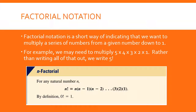So for any natural number n, n factorial means n times (n minus one) times (n minus two), all the way down to three times two times one. By definition, zero factorial is one. That's a little weird, but it's a defined term.